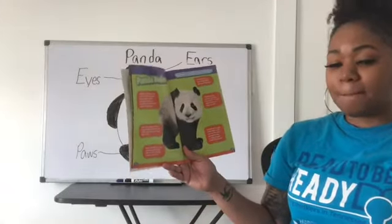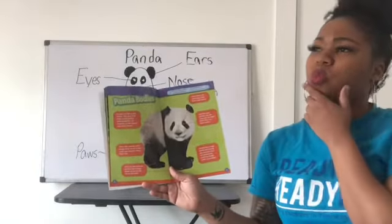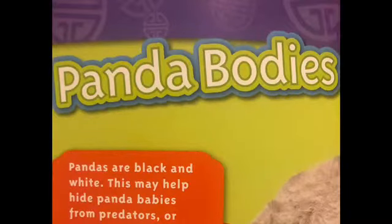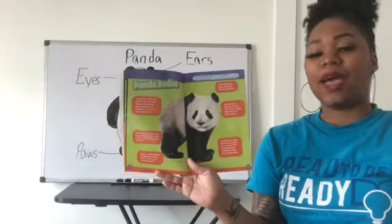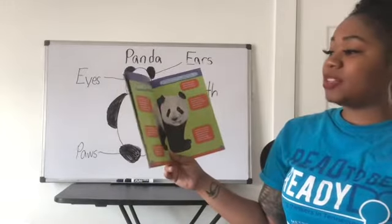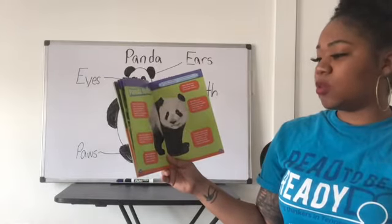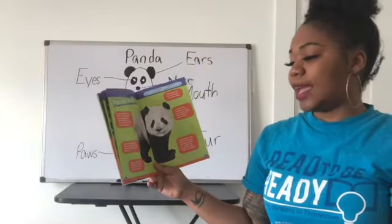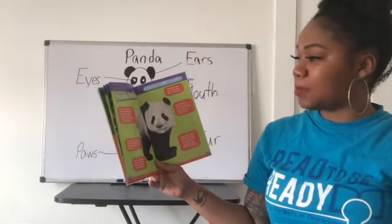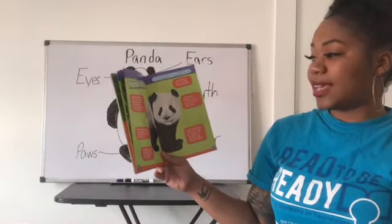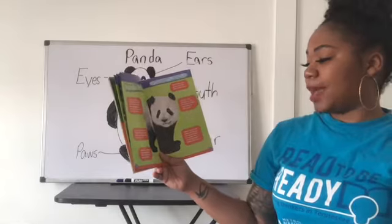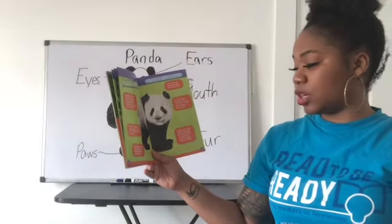Now we're on the 'Panda Bodies' section. The heading says 'Panda Bodies,' so this page is going to tell us all about a panda's body. Pandas are black and white, which may help hide panda babies from predators in the snowy, rocky forest. Their oily, woolly coat keeps them warm in cold, wet forests. Hairs on the bottom of their feet keep them warm on snowy ground. Their black eye spots may help them look fierce. Like cats, pandas can see very well at night when they are most active. Pandas have large teeth and strong jaw muscles perfect for crushing tough stalks of bamboo.